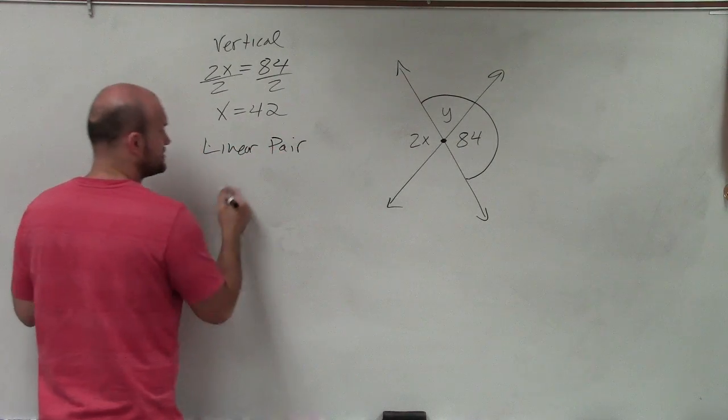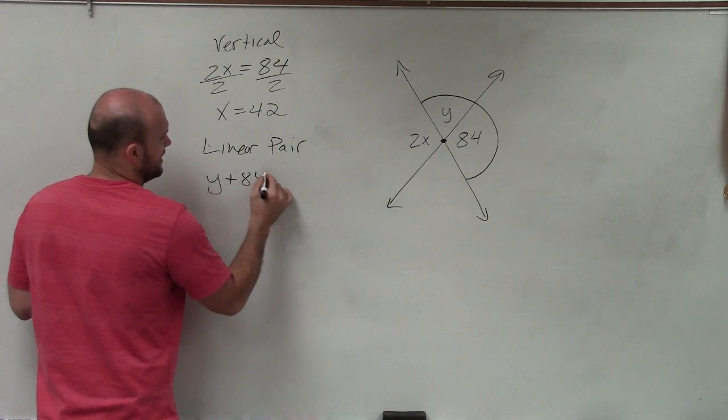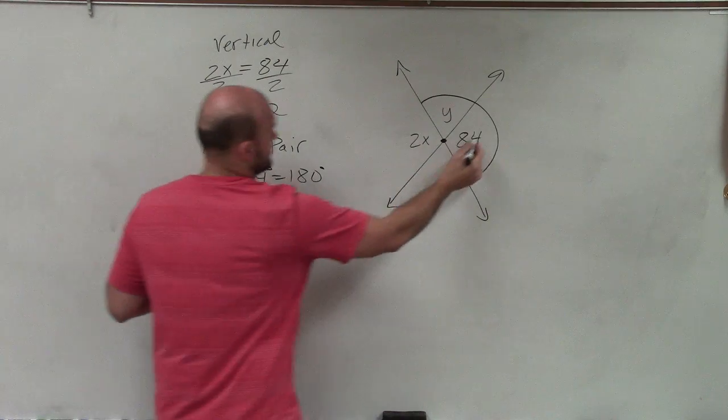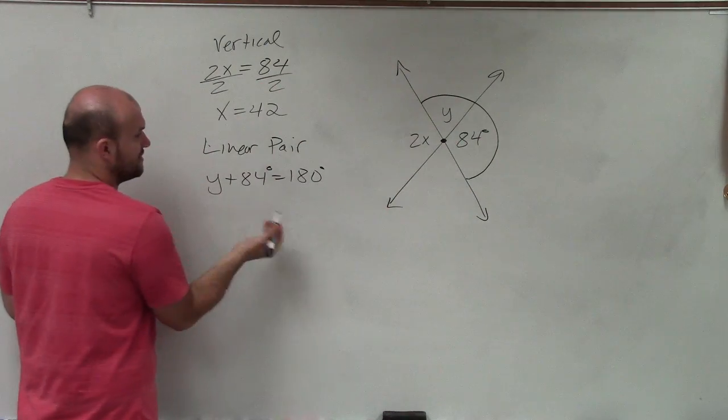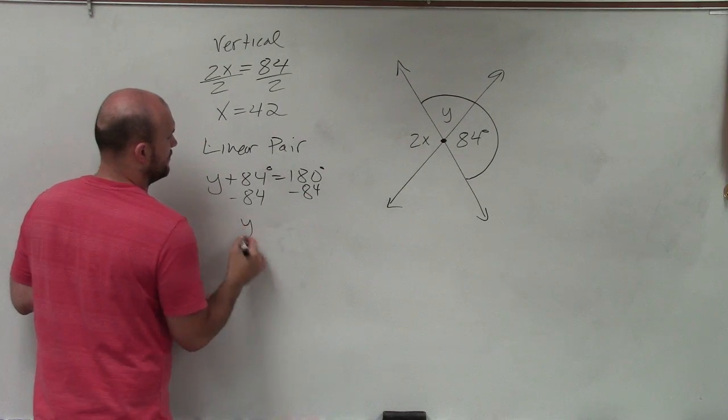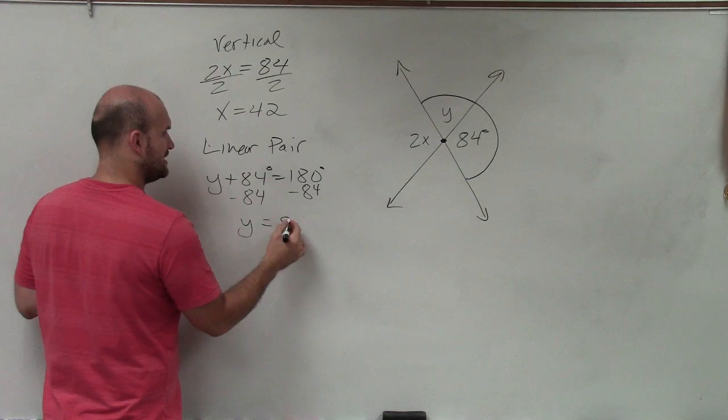So again, I'll write what I'm going to use, and I'm going to say y plus 84 is equal to 180 degrees. I guess I could probably add those degrees in there. So therefore, to solve, I'll subtract 84, subtract 84, and then y equals 96.